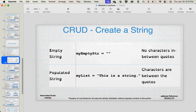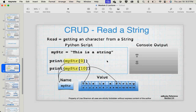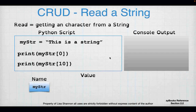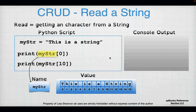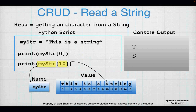CRUD kind of applies to strings too. You can create and read just like a list. You can delete the entire string, but you can't just delete an element out of the string. To update, you create a new string with the modification you want. To create a string, you can create an empty string — just open and close quotes with nothing in between — or a populated string like mystr equals 'this is a string' between the quotes.